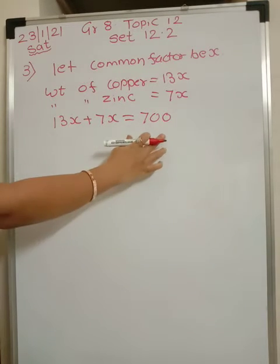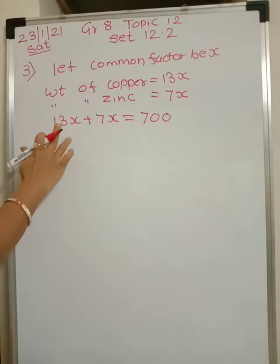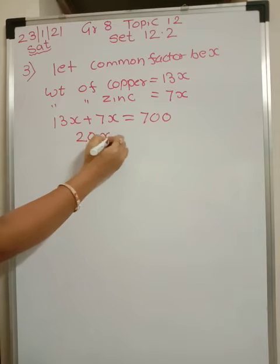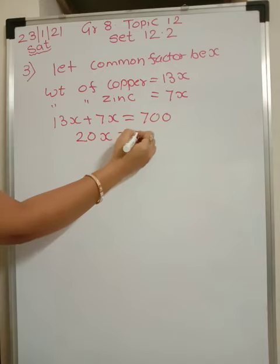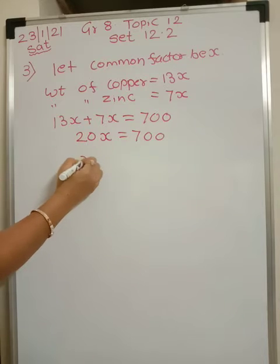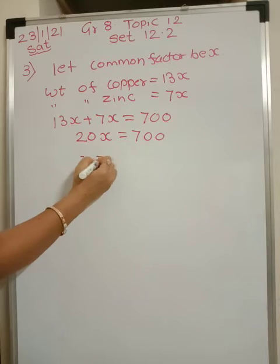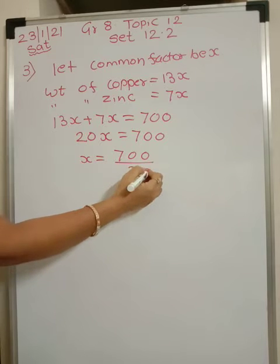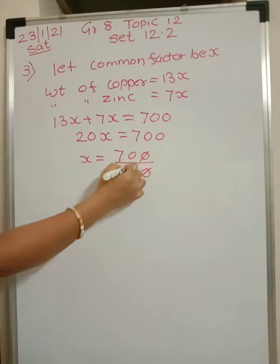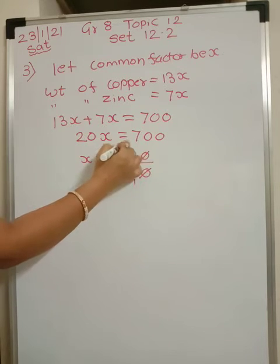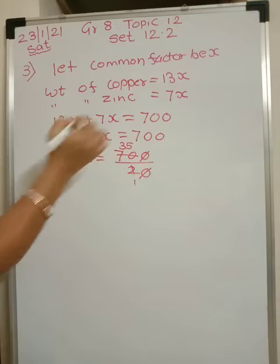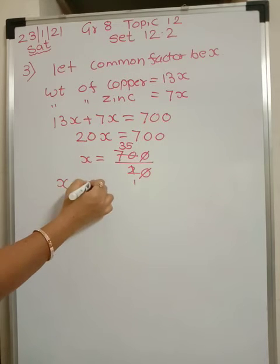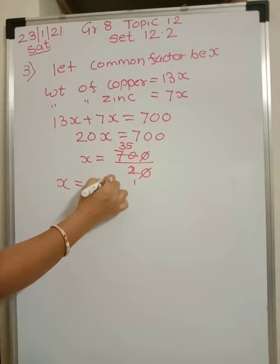This is the equation. 13 plus 7 is 20, so 20x is equal to 700. Therefore x equals 700 divided by 20, which gives x equal to 35.